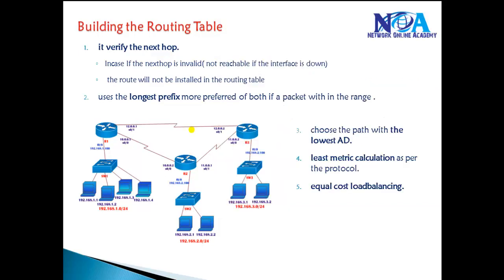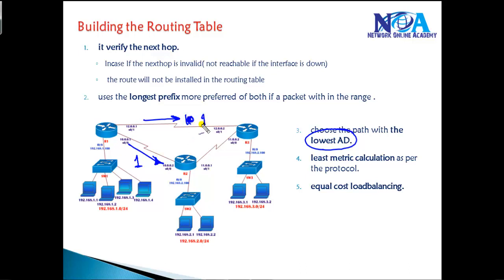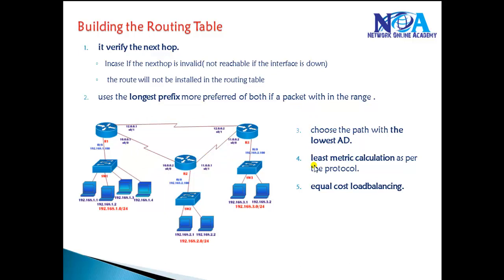So the first thing the router checks is the longest prefix match. If the prefix is the same, it considers administrative distance as the deciding factor - the route with the lower AD value is preferred. In the case of static routing there is no metric, but for RIP it compares hop counts, and for EIGRP or OSPF it checks least cost. If both routes have the same metric, it installs both routes and forwards traffic via both - this is called equal cost load balancing. This is the default step-by-step route selection process used by routers when installing routes in the routing table.